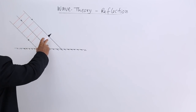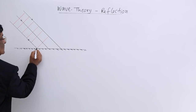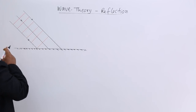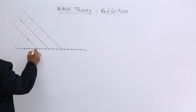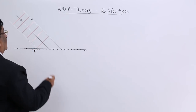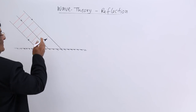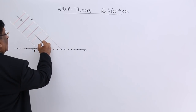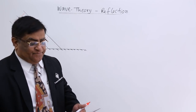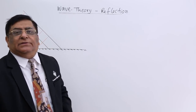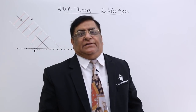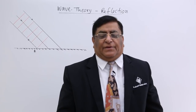When the wavefronts are approaching, this is the point where the first wavefront strikes. Let us call this point A. Now this wavefront is here, and all these points are there to make secondary waves. Here is one measurement — the angle of incidence. How do we measure angle of incidence in the case of waves?